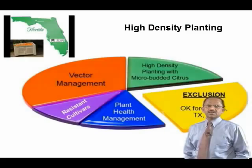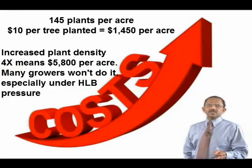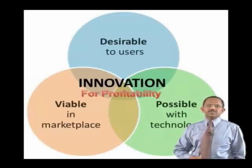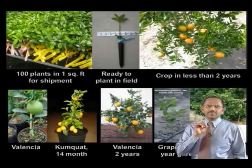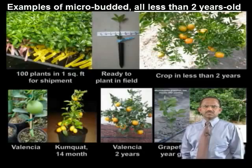High-density planting for faster returns is an option, but it costs a lot of money to plant more trees per acre with the conventional system. I want to discuss the use of innovation for profitability. I want to show you how an innovative product developed and commercialized in Texas can be an answer to the HLB problem in Florida.